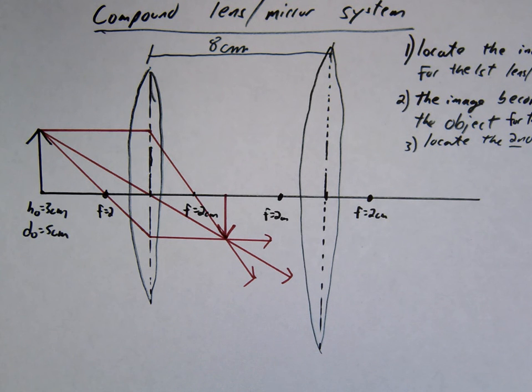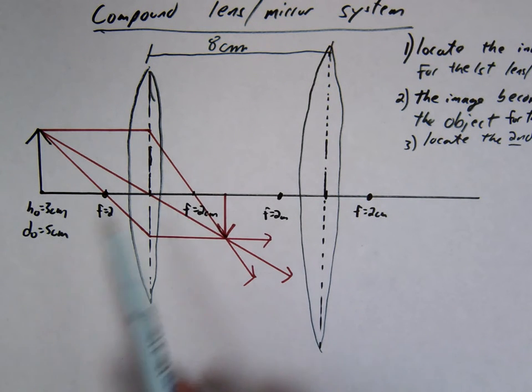So then what you're going to basically do is you're going to say, alright, the image now becomes the object. So I'm just going to ignore the first lens completely and just say, here's my image. This is now my object. I'm going to go ahead and find the image over here. This is slightly different. It is upside down compared to what we usually do. But you follow the same rules. You're just going to do it upside down.